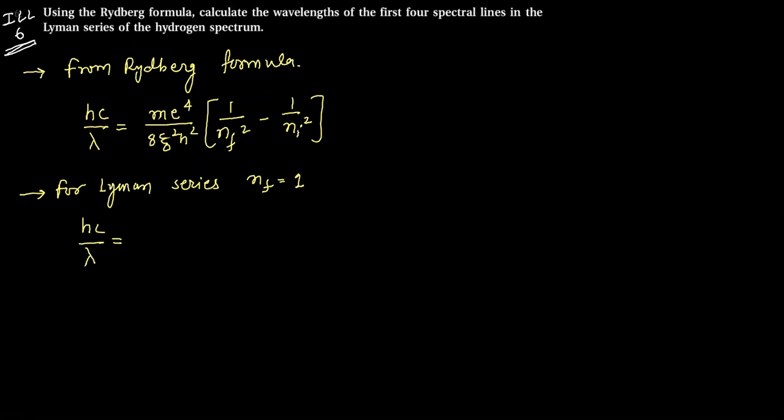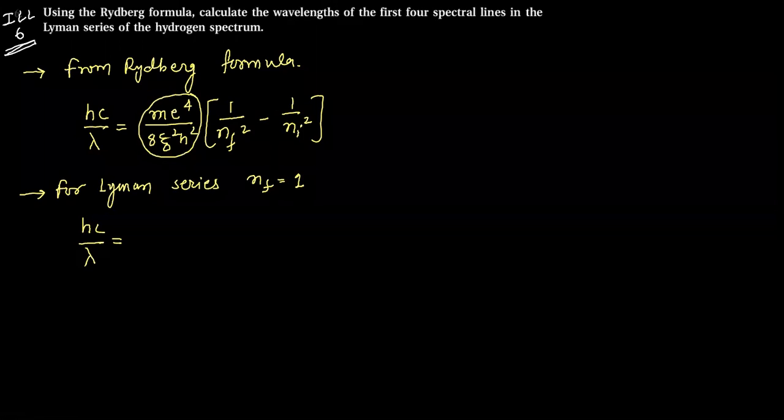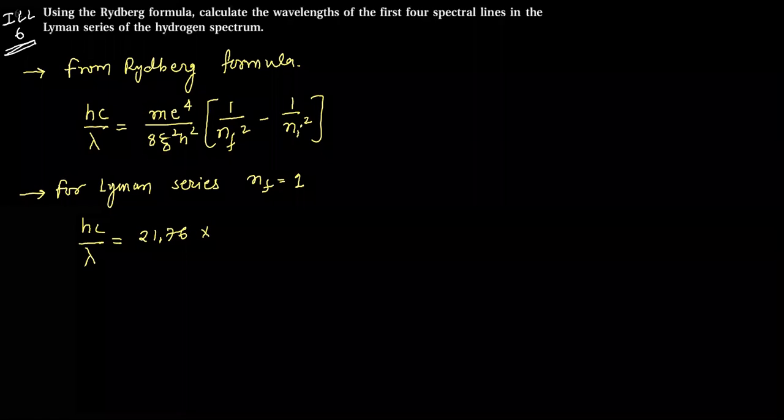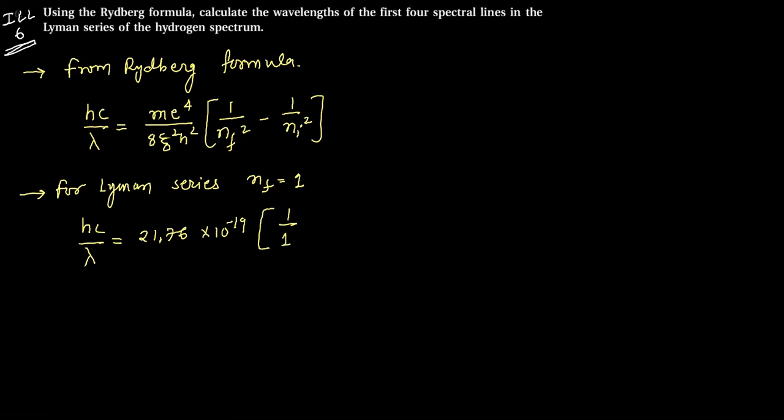Now for this calculation, mass is 9.1 times 10 raised to minus 31, e is 1.6 into 10 raised to minus 19, 8 epsilon 0 value is 21.76 into 10 raised to minus 19. One divided by one squared.